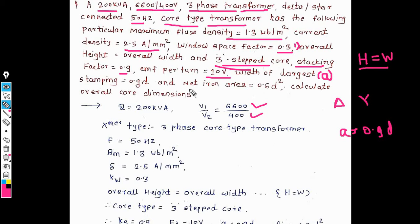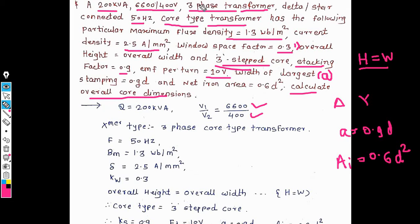The width of the largest stamping, a, is equal to 0.9d. The net iron area Ai is given as Ai = 0.6d². We need to calculate the overall dimensions of this three-phase core-type transformer, following the same procedure as for a single-phase transformer but using the appropriate output equations and net iron area formula.